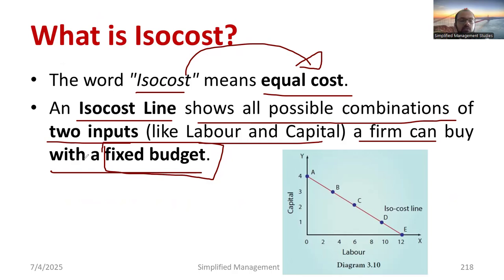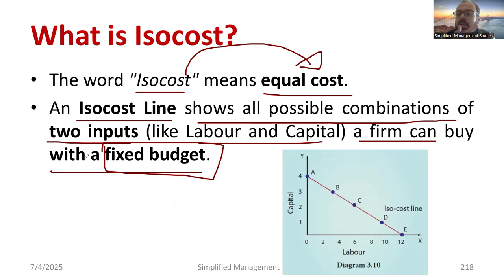You adjust labor and capital rather than output. In the isoquant curve we talk about quantity of output, but here the main thing is cost — cost is fixed. With a fixed cost, you adjust the inputs. Sometimes labor cost is very high and material cost is very less, so you try to adjust. Sometimes machine cost is less and labor cost is more, or vice versa. You adjust the particular quantities in such a way that you meet the certain budget.